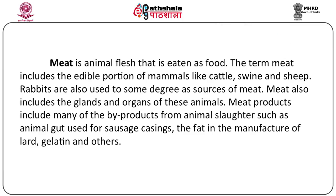So how do we define meat? Meat is animal flesh that is eaten as food. The term meat includes the edible portion of mammals like cattle, swine and sheep. Sometimes rabbits are also used as sources of meat. Meat also includes the glands and organs of these animals. Meat products include many by-products obtained from animal slaughterhouses such as animal gut used in sausage casings, fat in the manufacture of lard, gelatin and others.